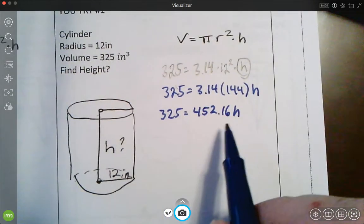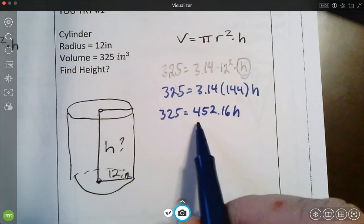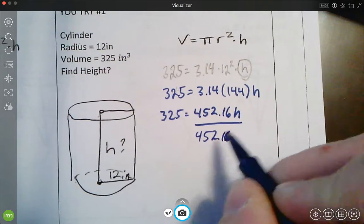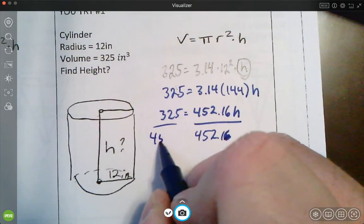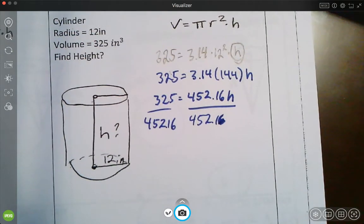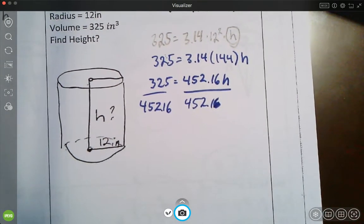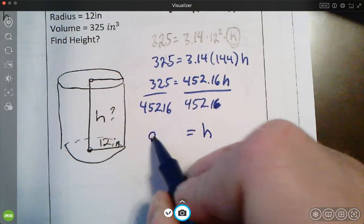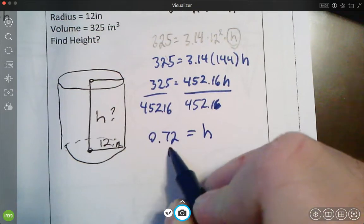And now to solve for height, just like a normal one-step equation, you're going to divide each side by 452.16. So your answer you should have got for that one, 325 divided by 452.16. Yikes. That is a small height. Hopefully that's right. So I got 0.72 inches.